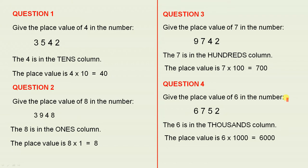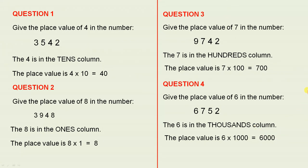Question 4. Give the place value of 6 in the number 6752. Since the 6 is in this column, the 6 is in the thousands column. The place value is 6 times 1000, which is 6000.